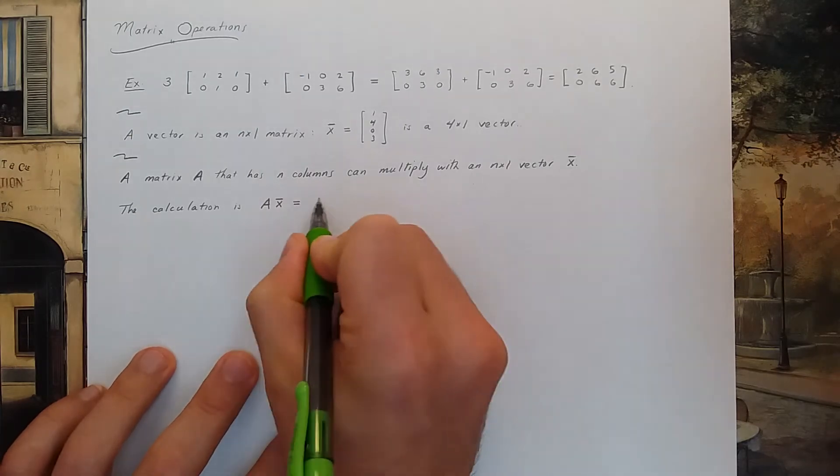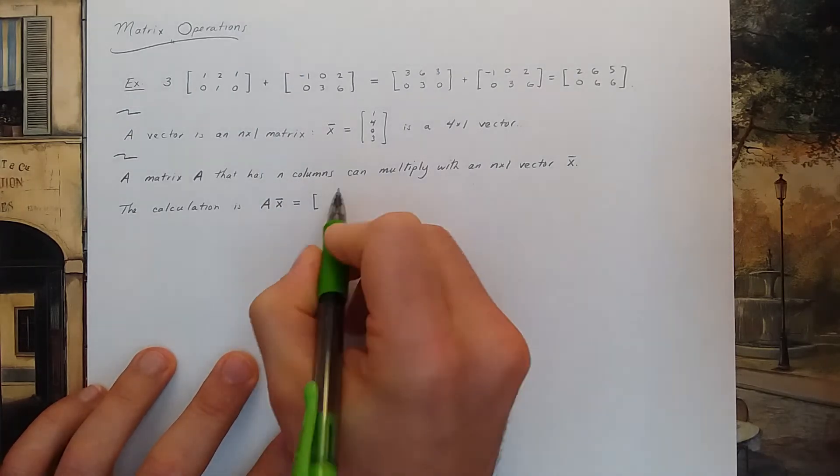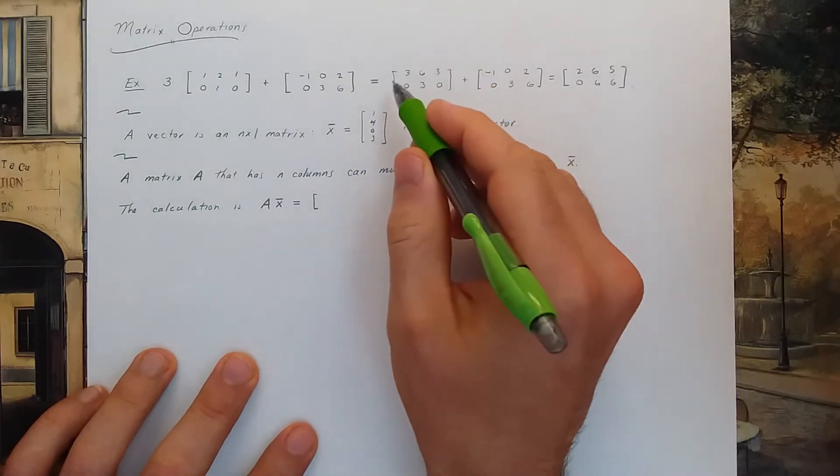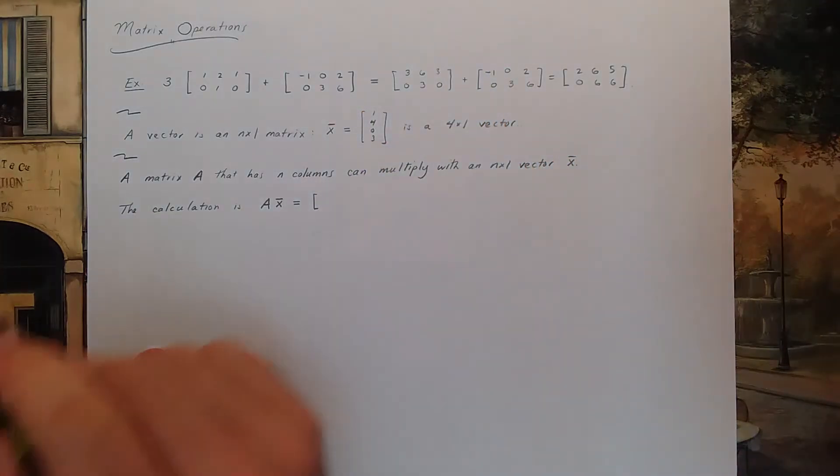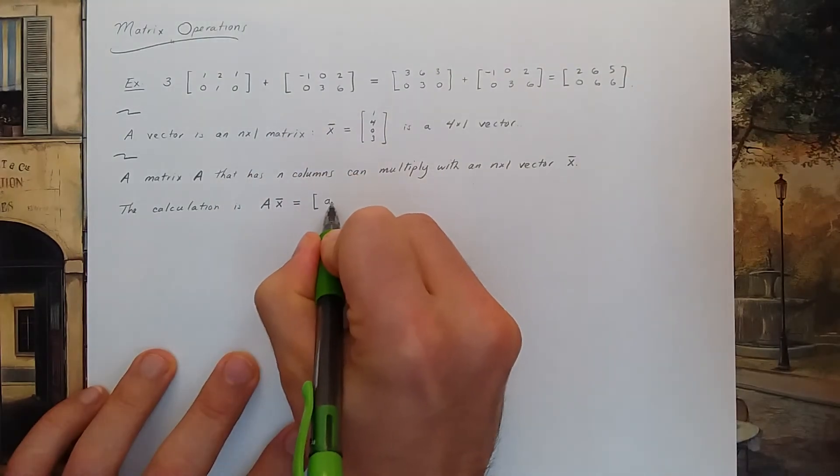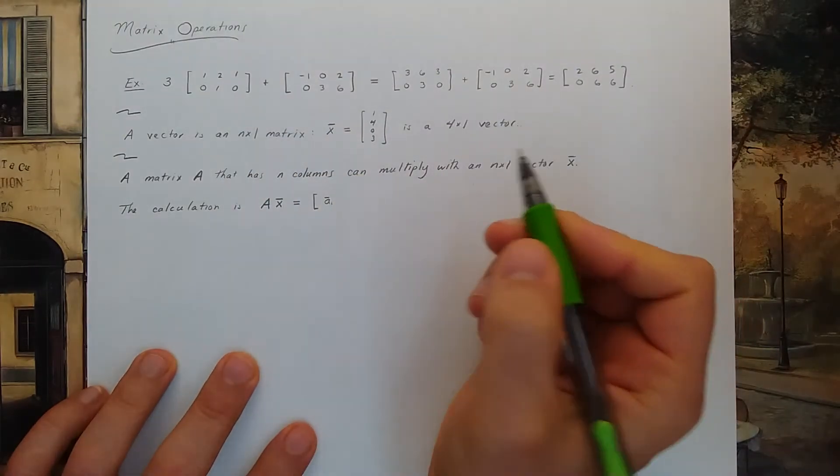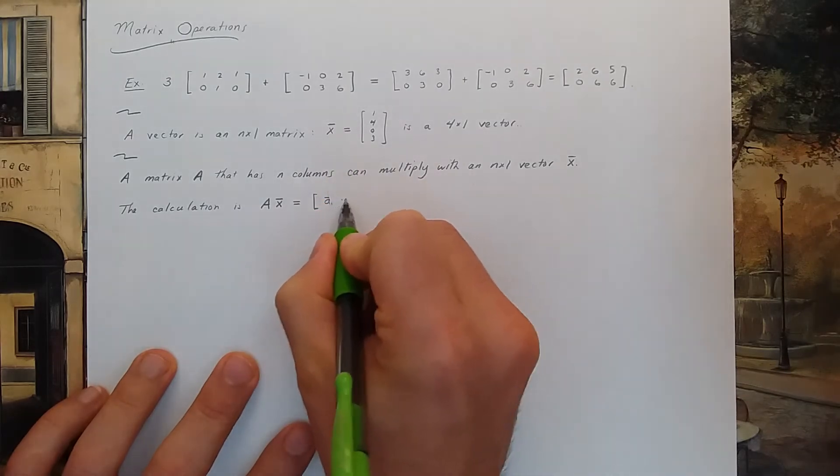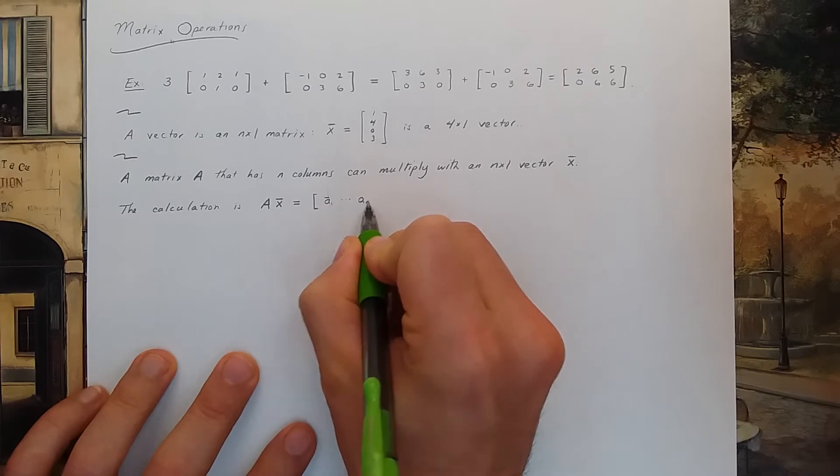Let's say the matrix A has n columns. Those columns are vectors because again a vector is just a column of numbers. So let's say that first column is the vector A1. So A1 is like a column vector that goes tall like that. The next vector is A2. And this goes on until I get to the last column An.